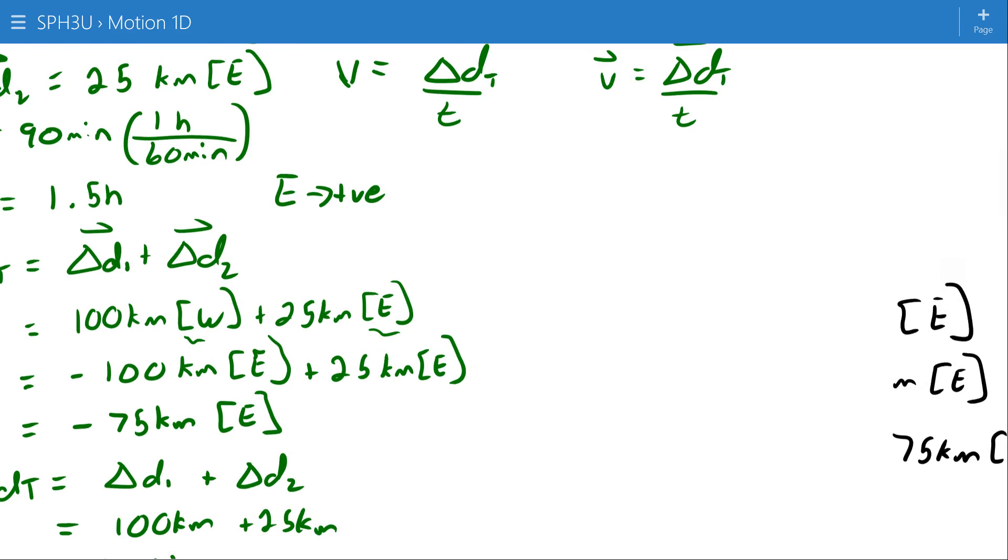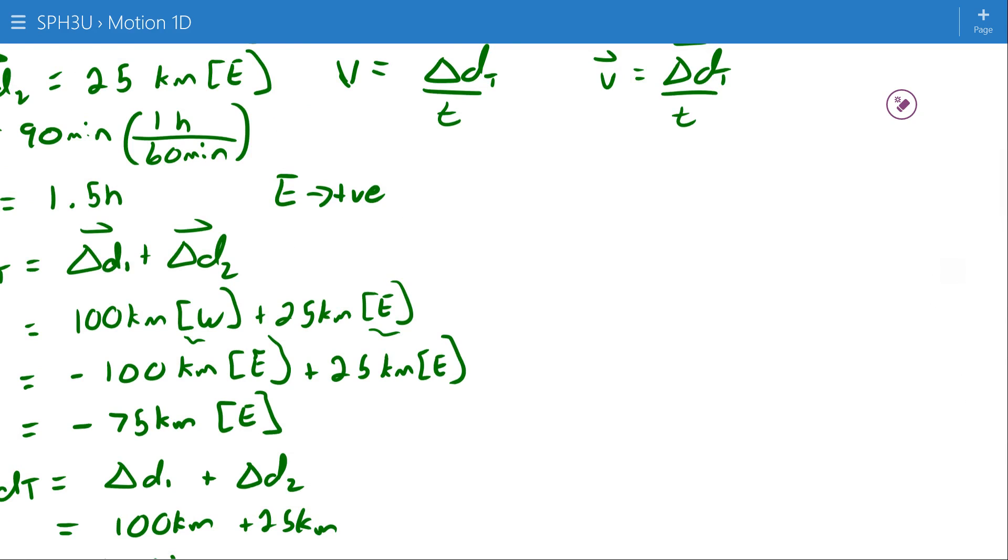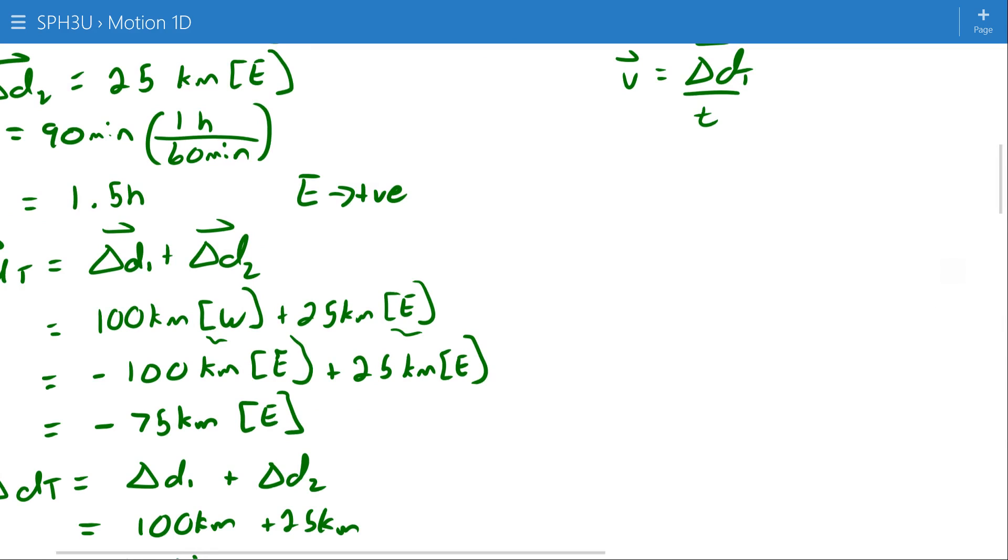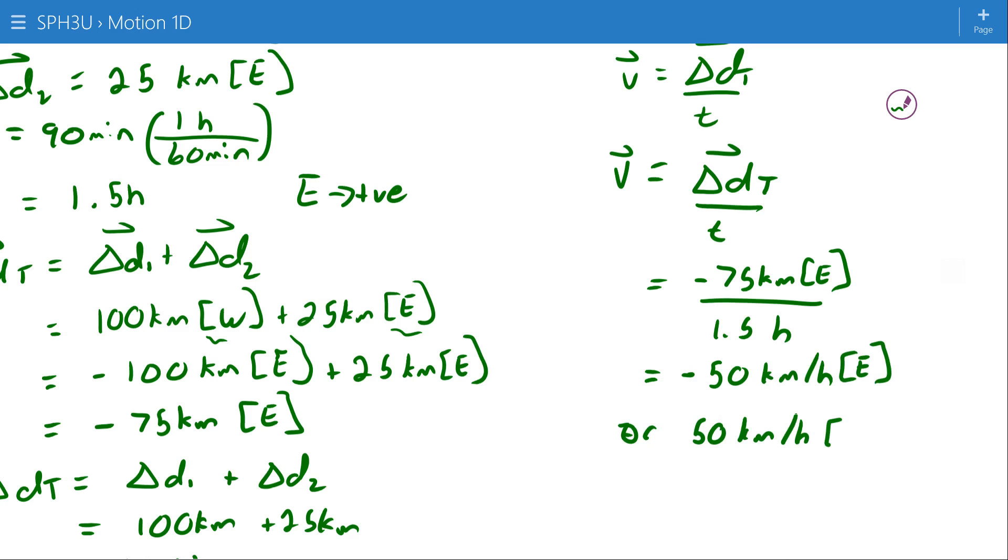Now we can go back up to our equations here. I'm going to work with the velocity first. The velocity is the displacement divided by time, so that would be negative 75 kilometers east in 1.5 hours, which works out to 50 kilometers per hour negative east. And what that really means is 50 kilometers per hour west.